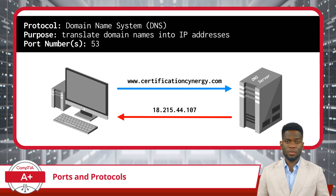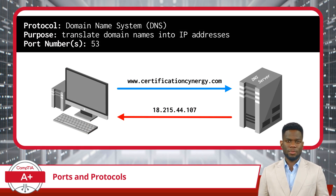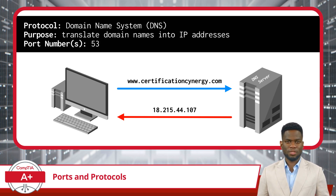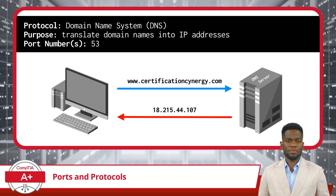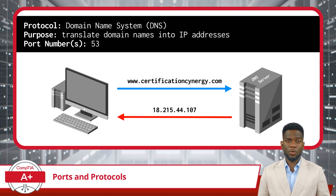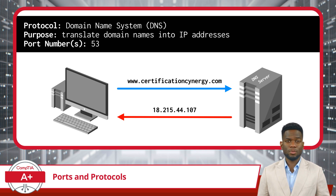Next, we have Domain Name System, or DNS, which is a fundamental protocol of the internet, often likened to a phone book for the World Wide Web. Its primary function is to translate domain names, which are easy for humans to remember, into IP addresses, which computers use to identify each other on the network. DNS operates mainly on port 53, used for both querying DNS servers and receiving responses.